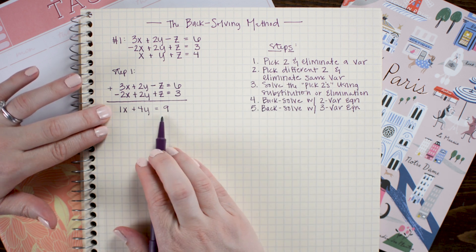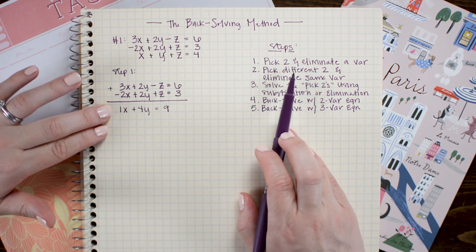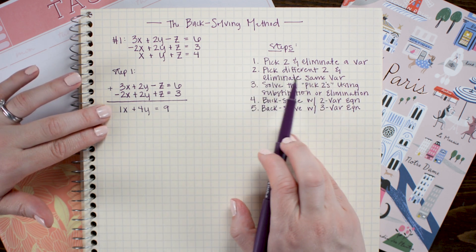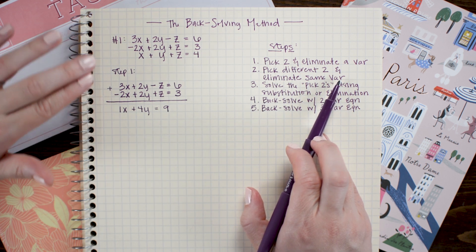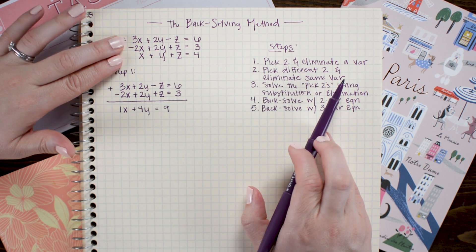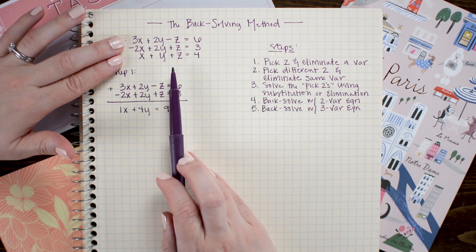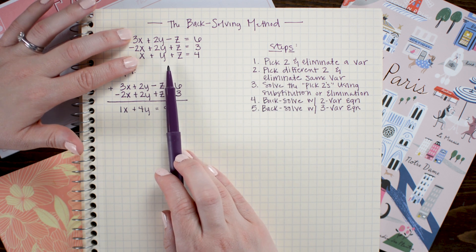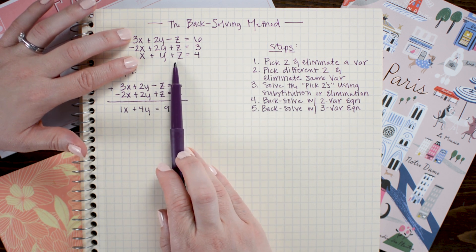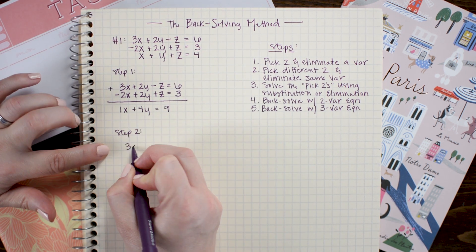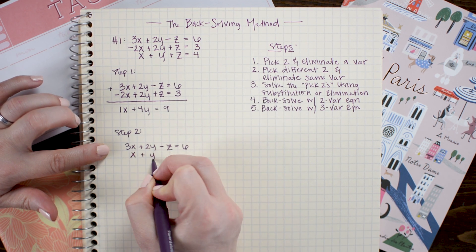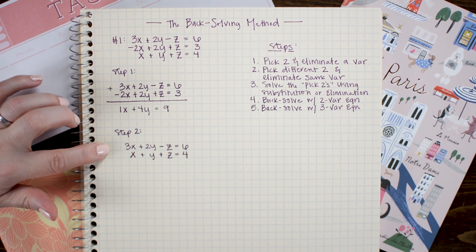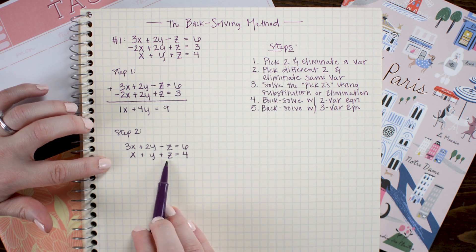I'm going to pause and leave that equation as is for the moment and move on to step two, which says pick a different two equations and eliminate the same variable. I'm going to pick two different equations and also eliminate the z variable from them. I'll choose the first and third equations this time, because once again the minus z and plus z is going to be really easy to eliminate. All I need to do is add the two equations to eliminate z.